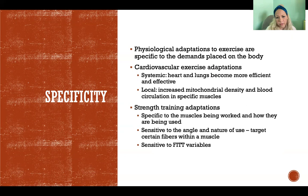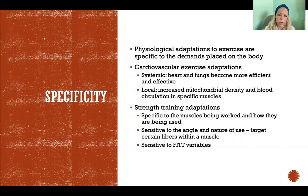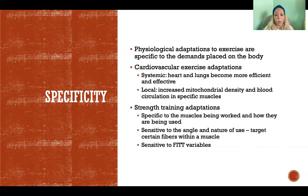Cardiovascular exercise also causes local and very specific adaptations. For example, the larger muscles we're using most during cardiovascular exercise will increase in mitochondrial density — meaning we build more mitochondria in those particular muscles. Hopefully you recall that the mitochondria are the powerhouse of the cells. The muscles we're using most require more energy, so we build more mitochondria in those muscles, improving their endurance.